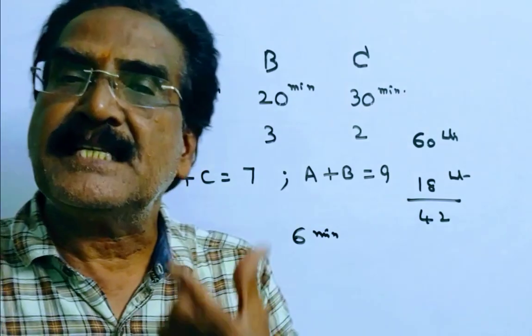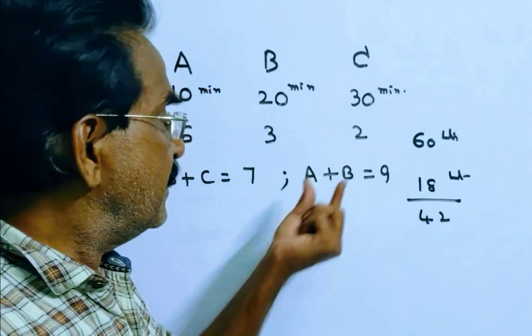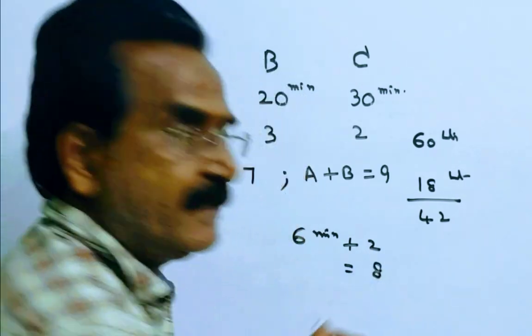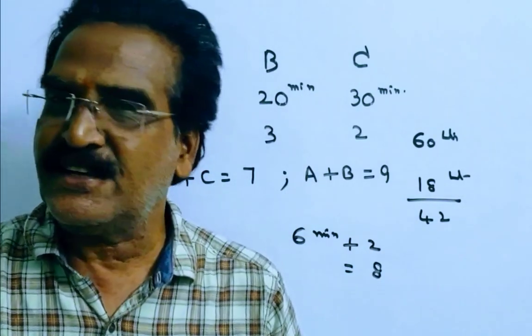So A plus B plus C worked for 6 minutes. A plus B worked for 2 minutes. So total time taken is 8 minutes friends. Thank you.